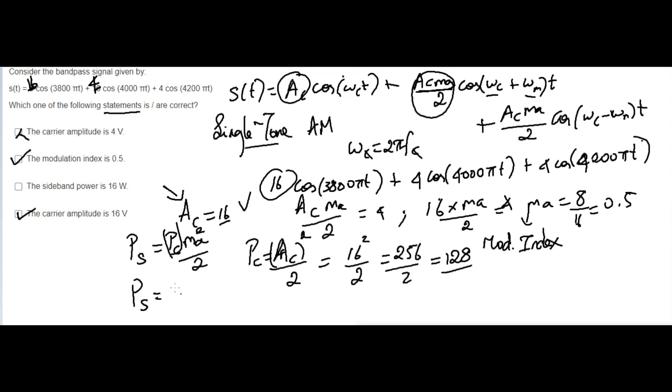So what is Pc? You know that Pc equals 128. So 128 times ma, ma is 0.5, right? So 0.5 squared divided by 2. So we can just make it as 64 times 0.5². If you do everything you'll get 16W.